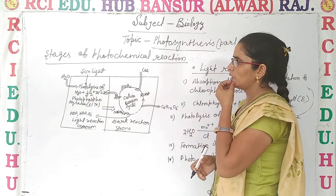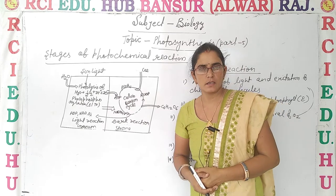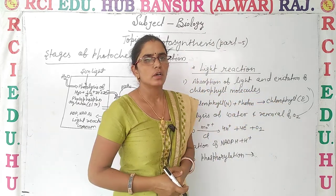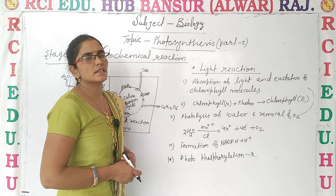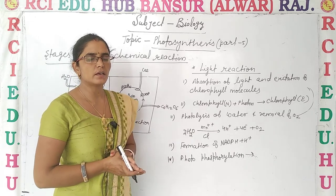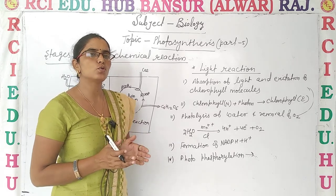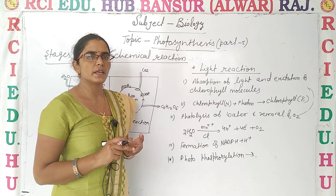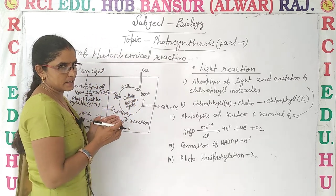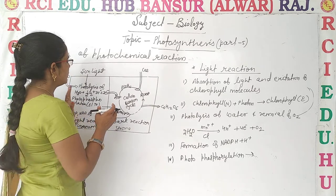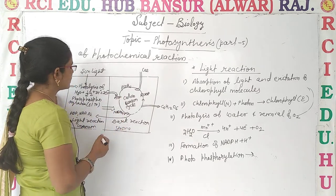In this we will discuss about the stages of photochemical reaction. Before this we also discussed that photochemical reactions take place in two steps: one is light reaction and another is dark reaction. Now let's discuss the diagrammatical representation of the light and dark reaction.